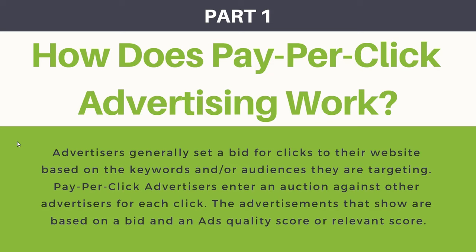How much you pay per click generally depends on how much revenue each click can drive to your business. If you're a lawyer, you're willing to pay $50 per click because one client can equal thousands of dollars. Same with real estate agents — they generally pay more. For home decor, even selling high-priced items, you're still only making a certain margin per sale. And because you're entering an auction against other advertisers, how much they're willing to pay affects how often you win.